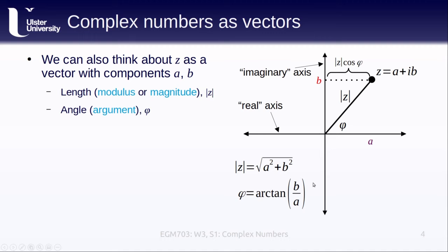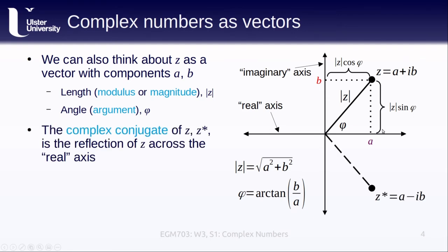And from this representation, we can also see that the real part of z is equal to the magnitude of z multiplied by the cosine of the angle z, while the imaginary part is equal to the magnitude multiplied by the sine of the angle of z. We can also define the complex conjugate of z denoted z* and this is just the reflection of z across the real axis. In other words, we multiply b by -1.